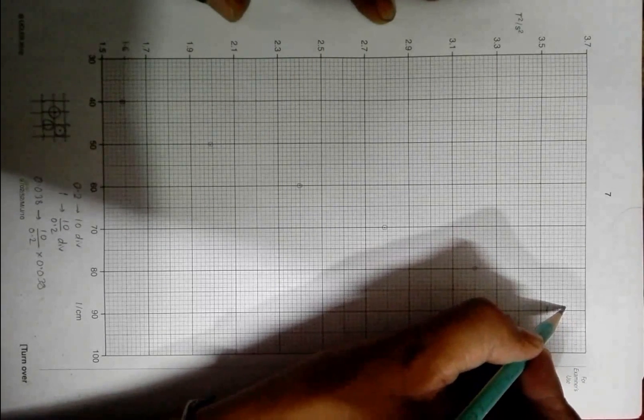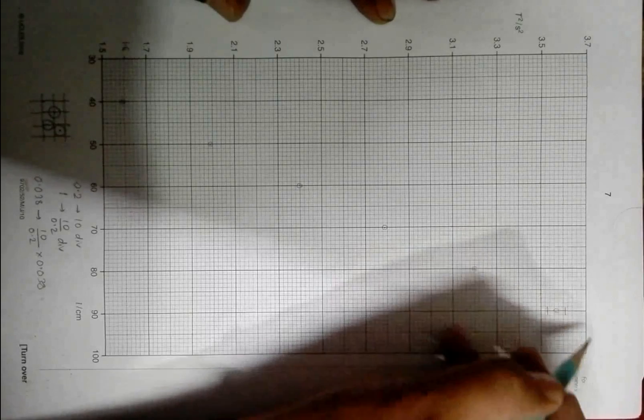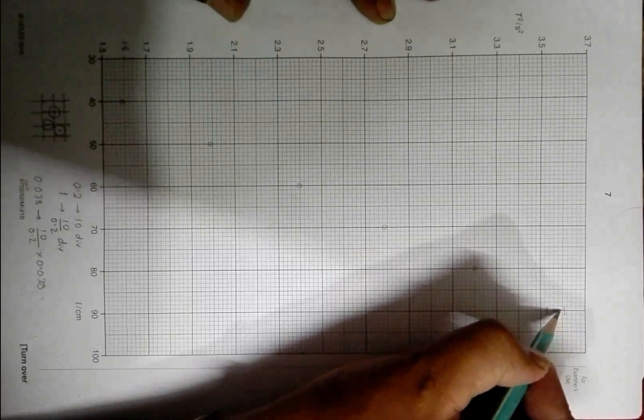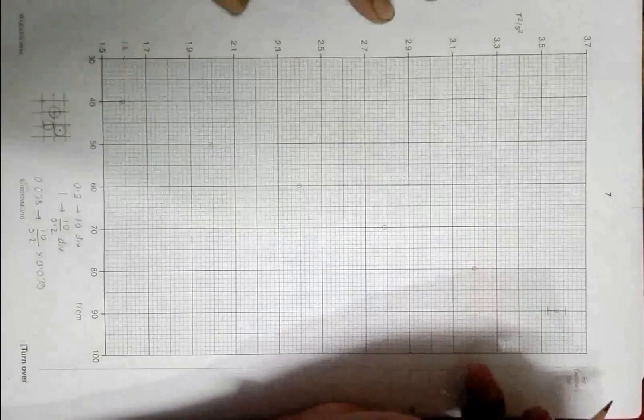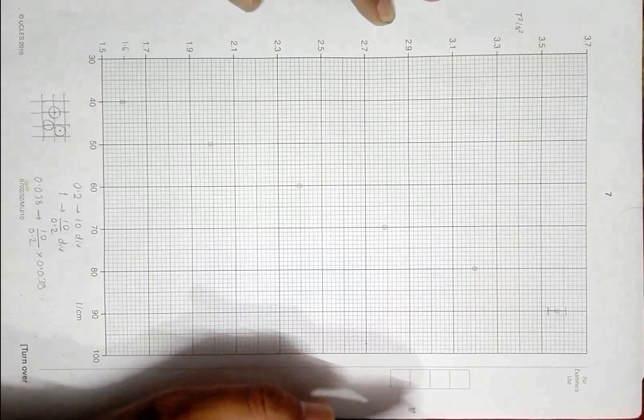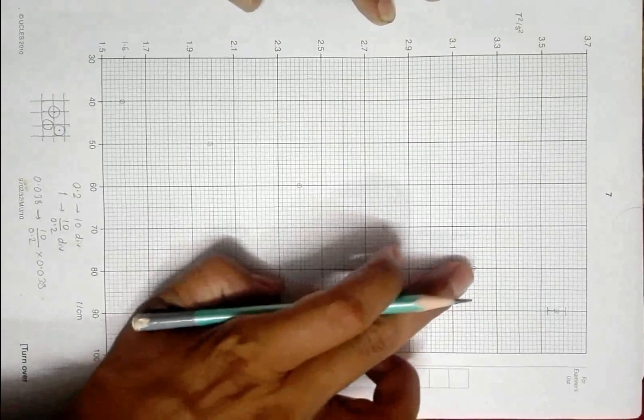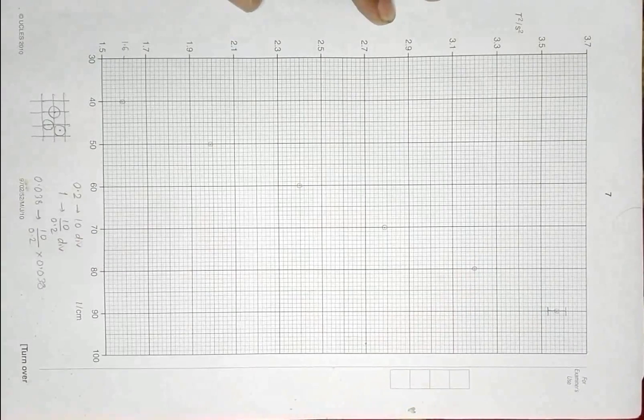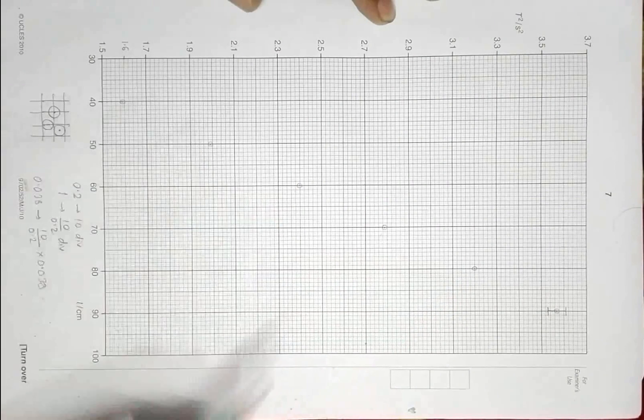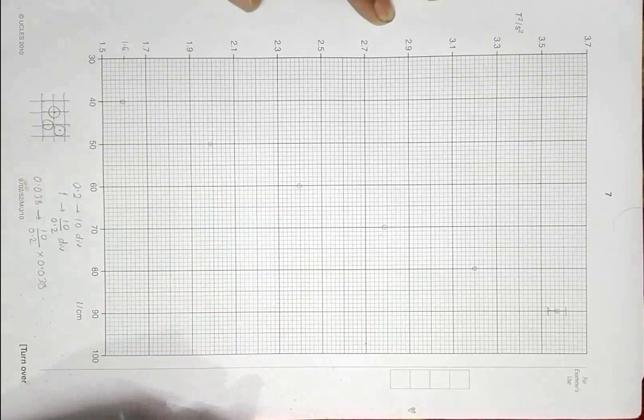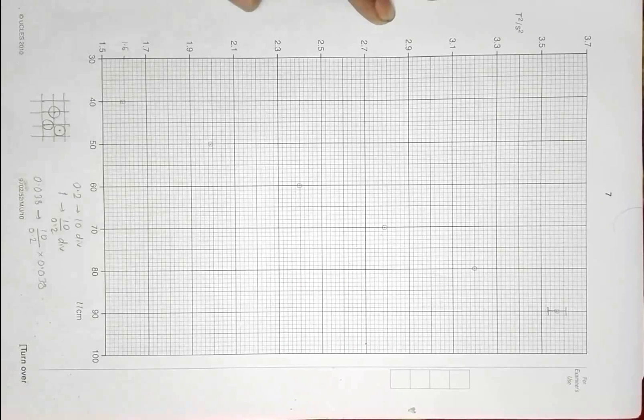This is the error bar that I have, small bar like this and small bar like this, then I connect this. This error bar is of plus minus 0.038. In a similar manner, I can draw error bars for all the other points. I will stop this video right here and come back after I complete all the error bars, then we'll draw the best fit line as well as the worst fit line.